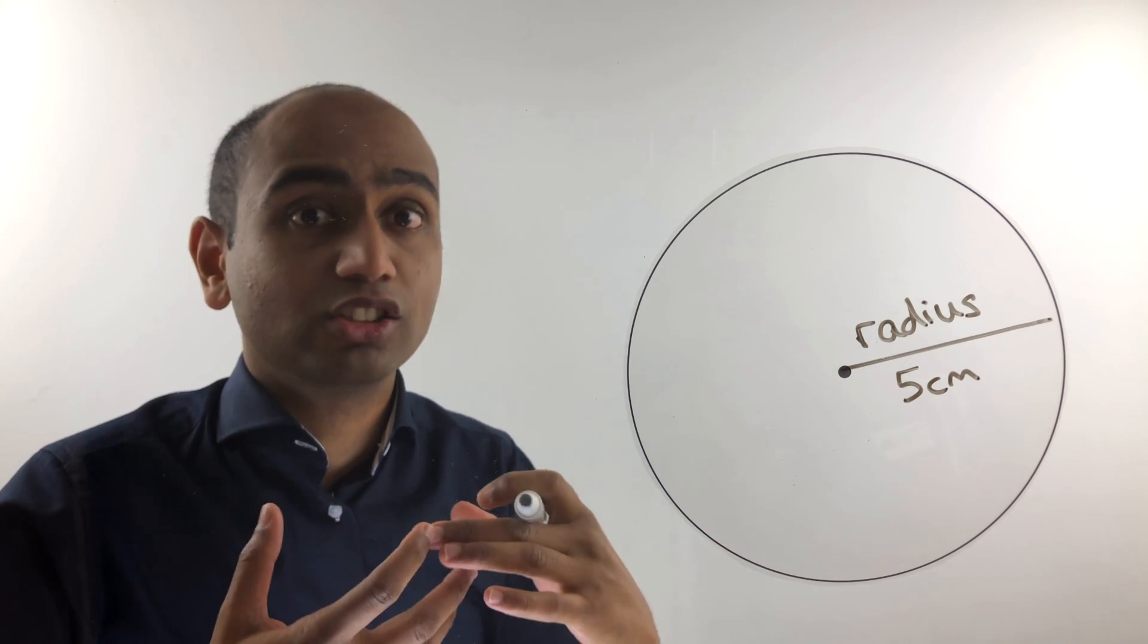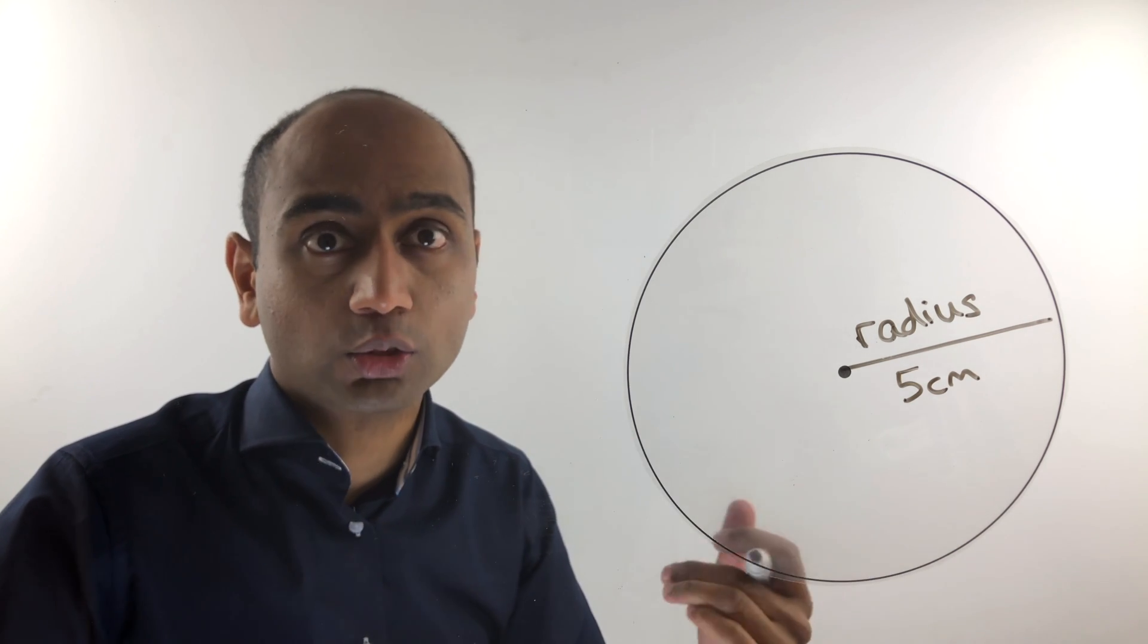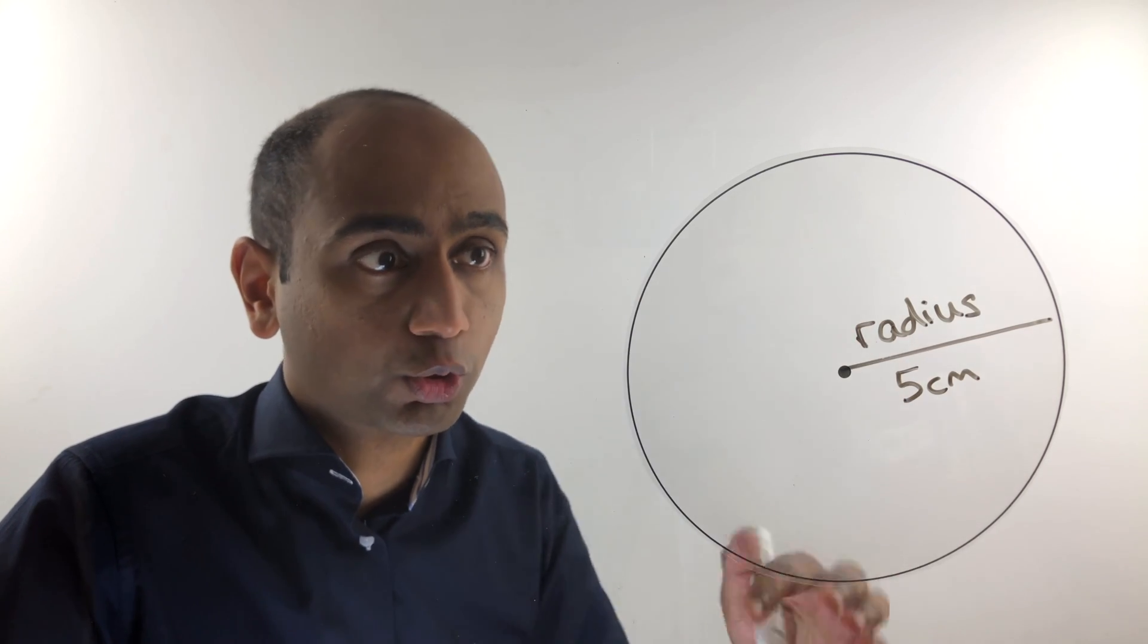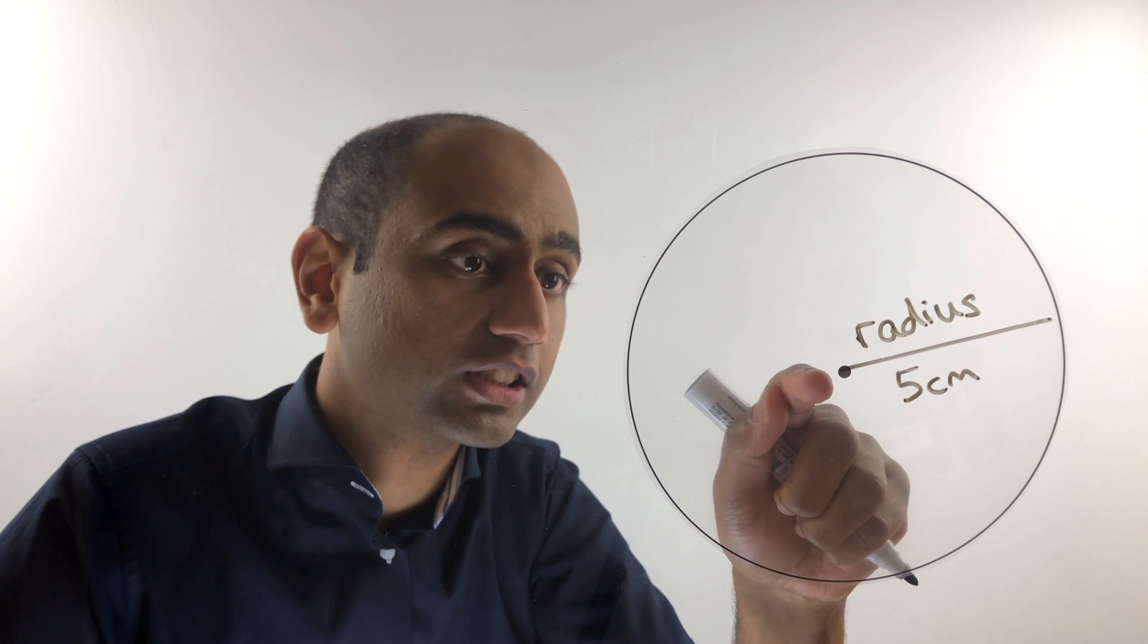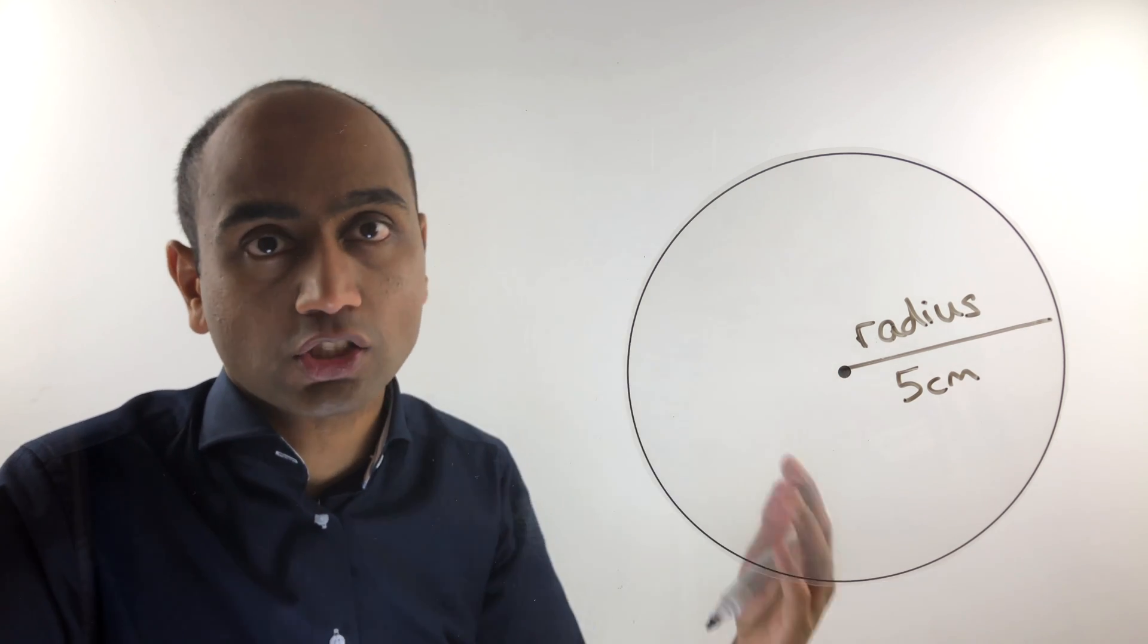If somebody said to draw a radius on this circle, you've got lots of possible choices. You could have drawn one in this direction, but you could have drawn one in absolutely any direction, as long as it went from the centre to the edge.